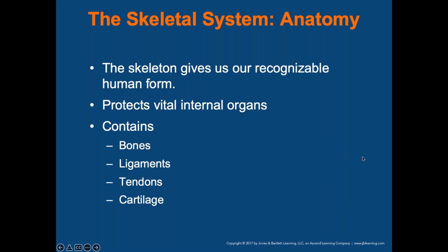Ligaments are fibrous tissues that connect bone to bone. Tendons are rope-like structures that connect muscle to bone. Cartilage is smooth connective tissue that covers the ends of bones at mobile joints — found in knees, elbows, throat, and chest. The bones also provide a framework for the attachment of muscles. We'll go into more detail on this as we move forward.